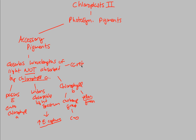Carotenoids are very famous — they kind of sound like carrots, right? Carotenoids, you can obviously imagine what color they are part of. They actually allow yellow and also orange to be accessed. So accessory pigments — Chlorophyll B and carotenoids — help out Chlorophyll A by widening the light spectrum that can be absorbed.